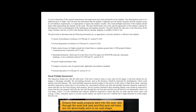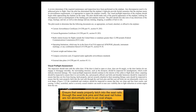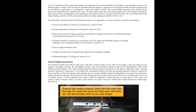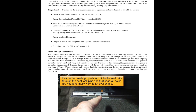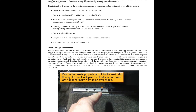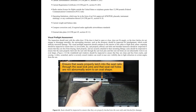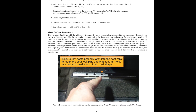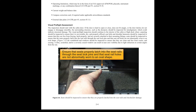The pilot needs to determine that the following documents are, as appropriate, on board, attached, and affixed to the airplane: Current airworthiness certificate, per 14 CFR Part 91, Section 91.203. Current registration certificate, per 14 CFR Part 91, Section 91.203. Radio station license for flights outside the United States or airplanes greater than 12,500 lbs, per FCC rules. Operating limitations, which may be in the form of FAA-approved AFM/POH, placards, instrument markings, or any combination thereof, per 14 CFR Part 91, Section 91.9. Current weight and balance data. Compass correction card if required under applicable airworthiness standards. External data plate, per 14 CFR Part 45, Section 45.11.